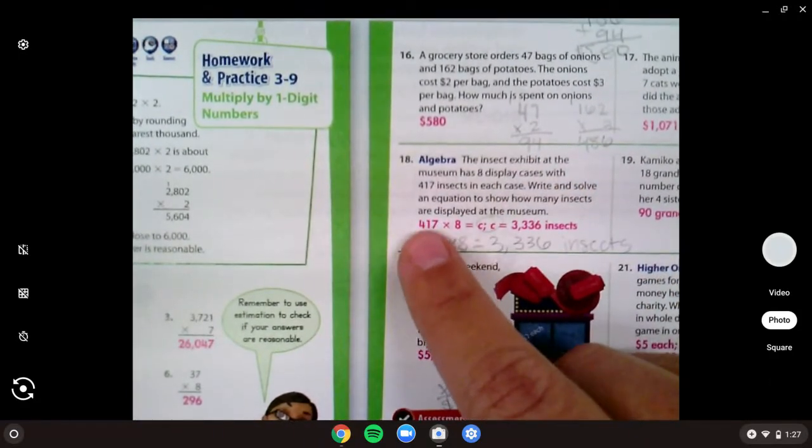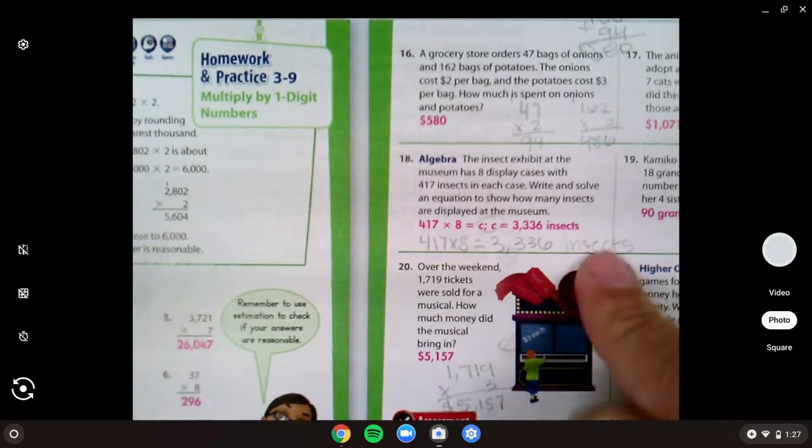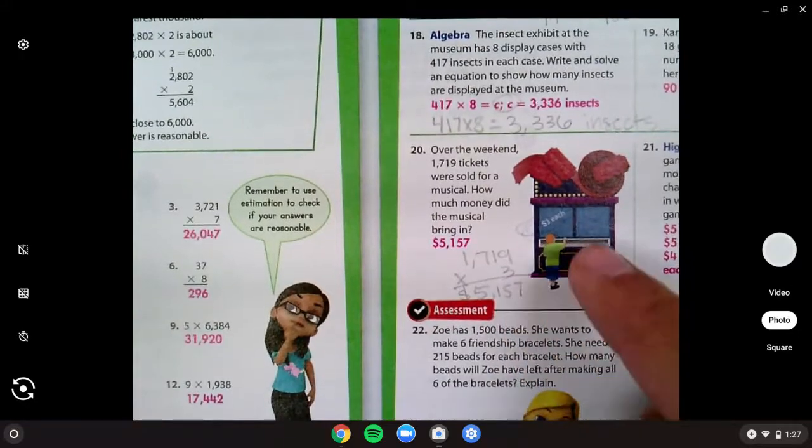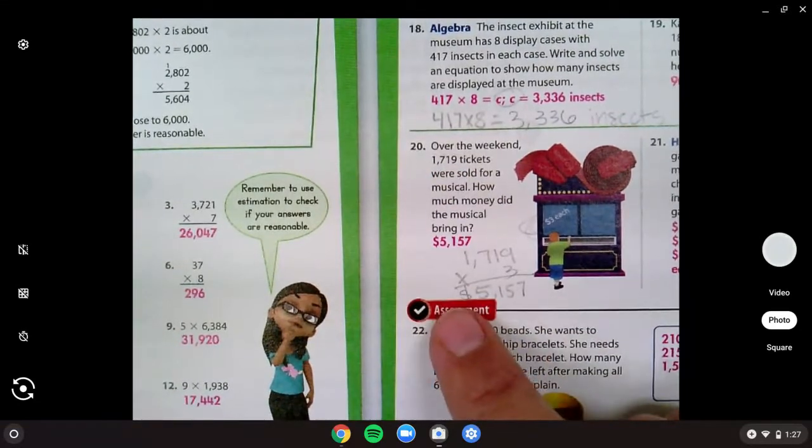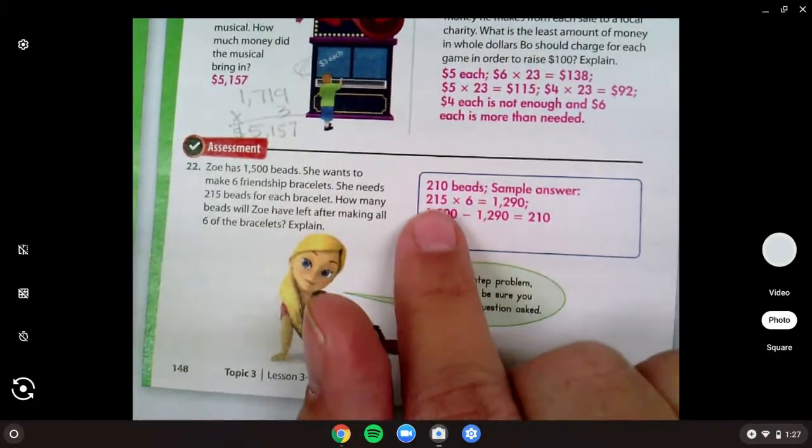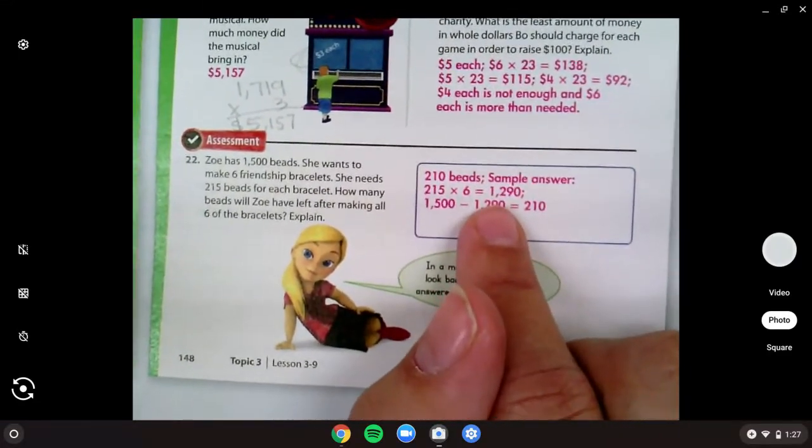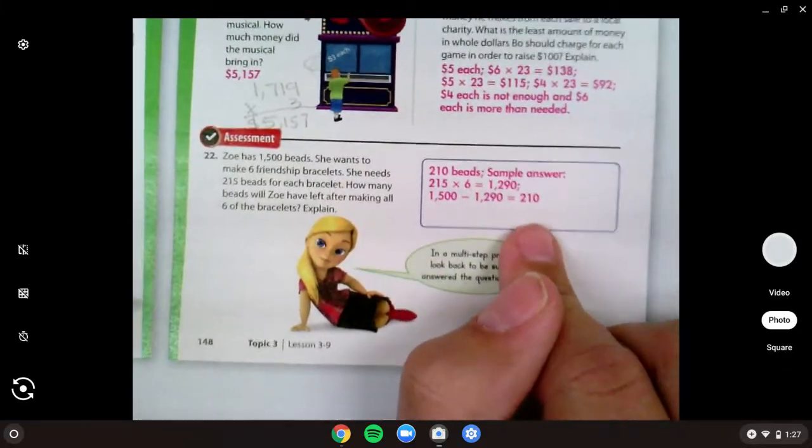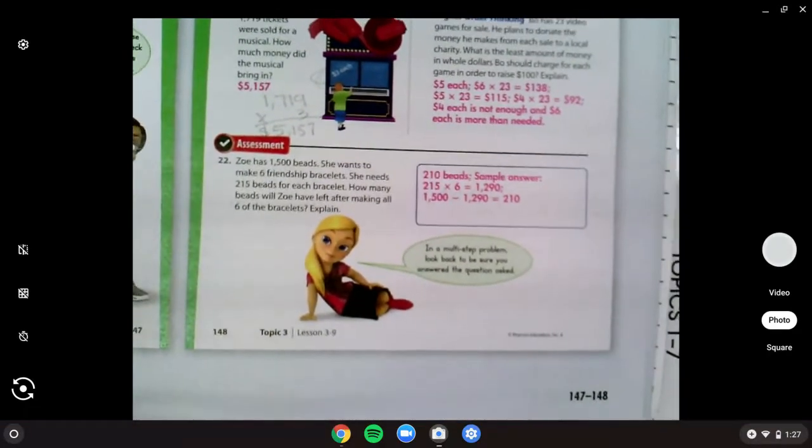18, you needed to do 417 times 8 to find 3,336 insects. Make sure you have the word insects as your label. And number 20 wanted you to find that tickets cost $3 each and multiply that by how many tickets were sold to find $5,157. 22, you needed to find 215 beads per bracelet, and she wants six bracelets. So she would need 1,290 beads. But she has 1,500. So if we subtract, we find out she's left with that 210, because our question wanted to find how much were left after making the six bracelets.